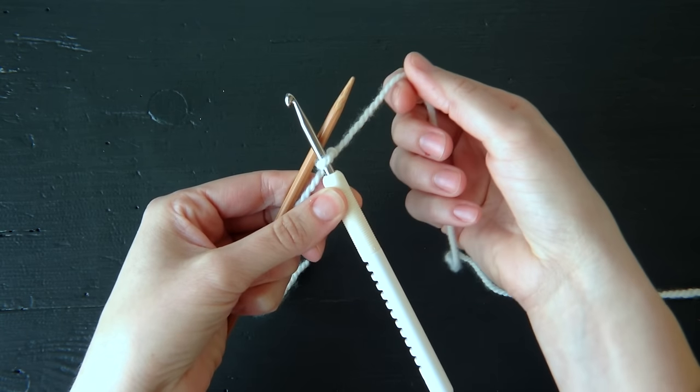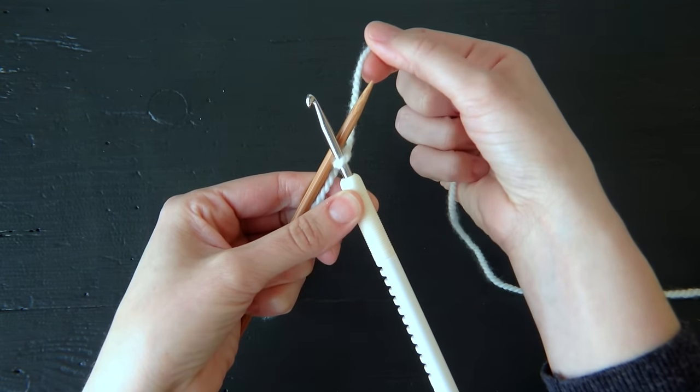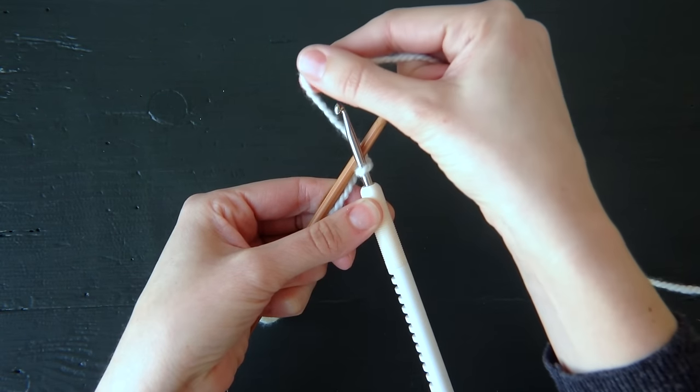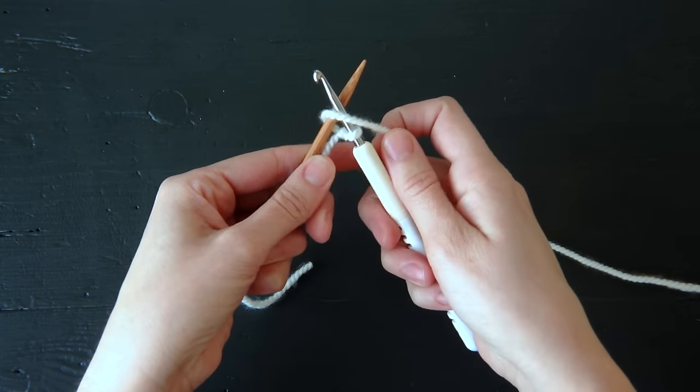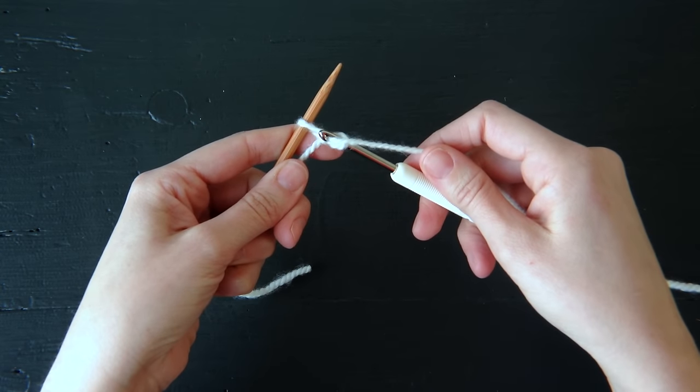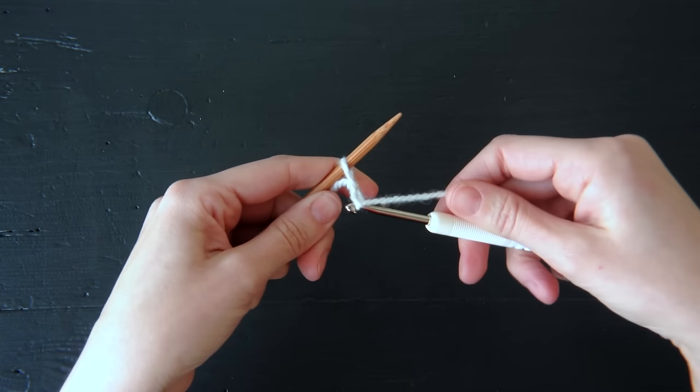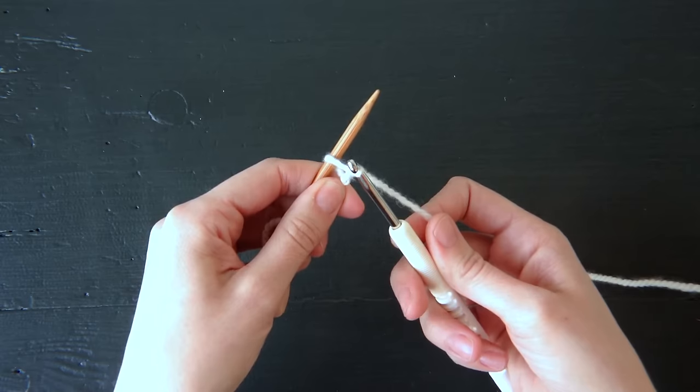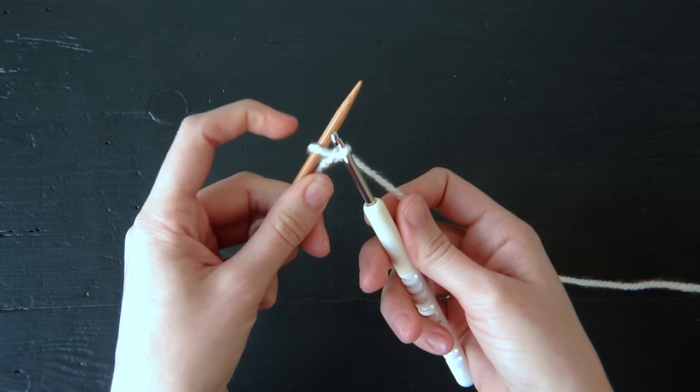Take your working yarn to the back, around the back side of the knitting needle and wrap it around to the front side of the crochet hook. Use the crochet hook to pull your working yarn through that loop and there you've cast on one stitch.